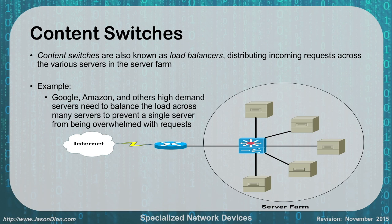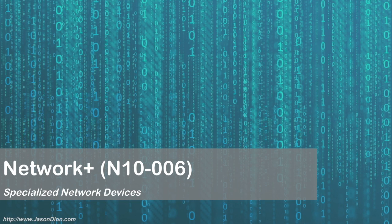Content switches are also known as load balancers. They distribute incoming requests across a variety of servers in the server farm. Think about big companies like Google, Amazon, and Microsoft — they have very high demand with lots of users trying to access them at once, and a single piece of hardware is not going to accomplish all that. So as somebody comes into Google, the content switch says this user goes to server one, this user goes to server two, this user goes to server three, keeping requests distributed so no single server is overwhelmed. And that is our specialized network devices.